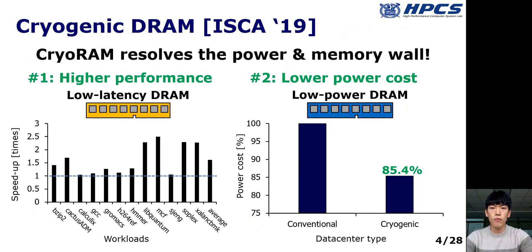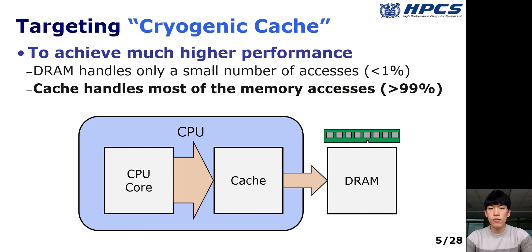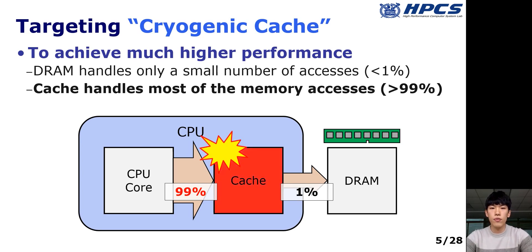Our previous work shows the potential of cryogenic computing focusing on DRAM devices. By using cryogenic low-latency DRAM, we can increase data center performance up to 2.5 times higher and greatly reduce data center power by 15%, even including cooling cost. However, there is more room to achieve higher performance. Optimizing DRAM only cannot maximize performance because DRAM handles only a small number of memory accesses, while cache handles more than 99%. Therefore, cache is the main performance bottleneck, and we target cryogenic caches for the next step.